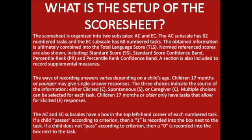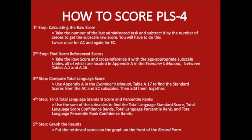The AC and EC subscales have a box in the top left-hand corner of each numbered task. If a child passes according to the criterion, then a 1 is recorded into the box. If a child does not pass, a 0 is recorded. To score the PLS-4, the first step is calculating the raw score: take the number of the last administered task and subtract it by the number of zeros to get the subscale raw score, done once for AC and again for EC.